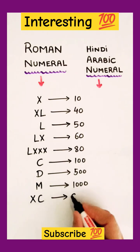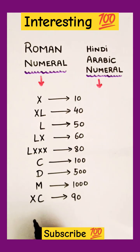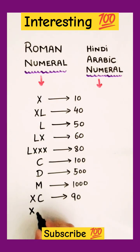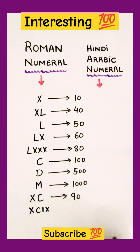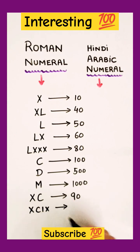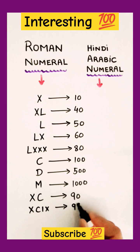It will make 90. And if I write X, C, I and this one, X. So, it is 99.